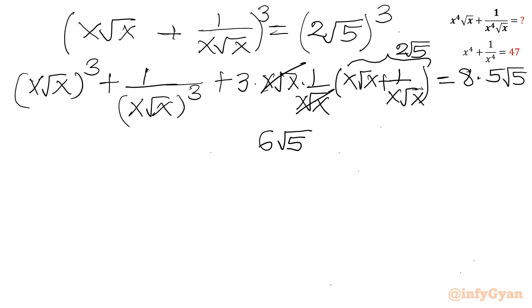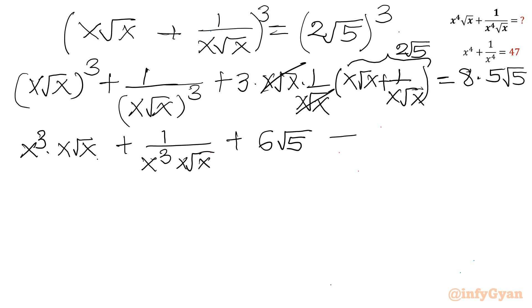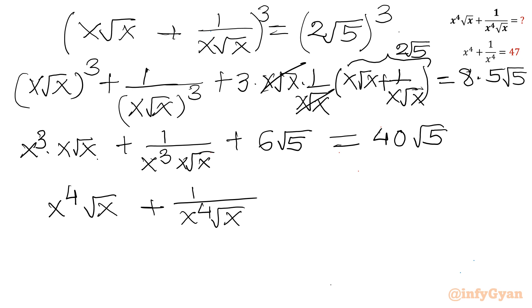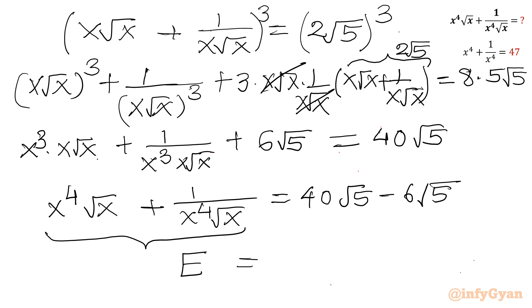Now (x√x)³ = x³·x√x and simplifies to x³·√x... giving us x⁴√x + 1/(x⁴√x) plus 6√5 = 40√5. Subtracting 6√5 from both sides: x⁴√x + 1/(x⁴√x) = 34√5. This is our expression E, so the final answer is E = 34√5.